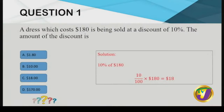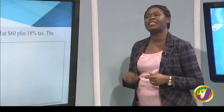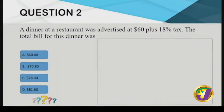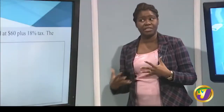So our answer is C — $18 will be coming off that $180. Question two: a dinner at a restaurant was advertised at $60 plus 18% tax. The total bill for this dinner was — here we see 'plus,' which indicates an increase in price, and 'total' also suggests addition.